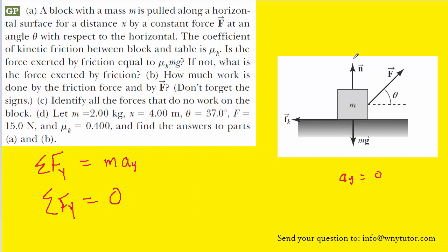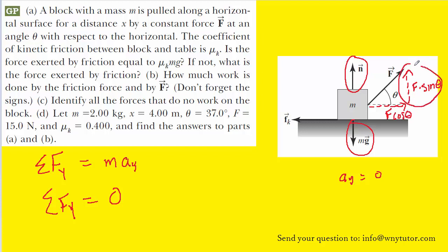Now let's consider the forces acting in the y direction. We have the normal force, the gravitational force, and then we have to be careful about the applied force — we need to break it up into its x component, which points to the right, and its y component, which points upward. We'll label that y component as F times the sine of theta, and the x component as F times the cosine of theta. Since we're looking at y forces, we add F sine theta into our analysis.